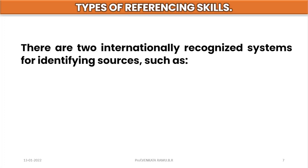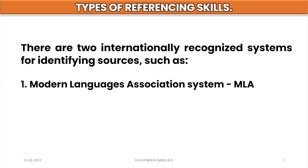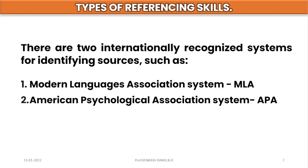Now let us move to the types of reference skills. When we think about reference skills, certainly there are two international recognition systems for identifying sources. Such as: the Modern Language Association system, also called MLA format, and the second one is called the American Psychological Association system, also called APA.